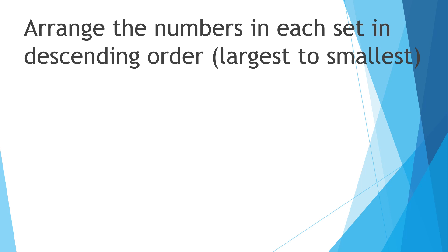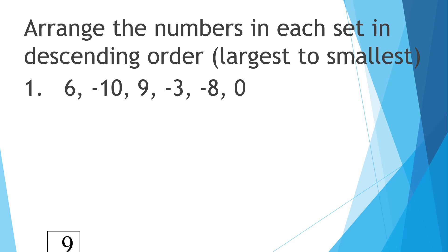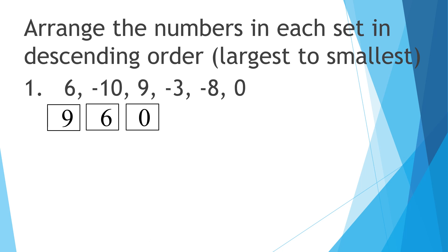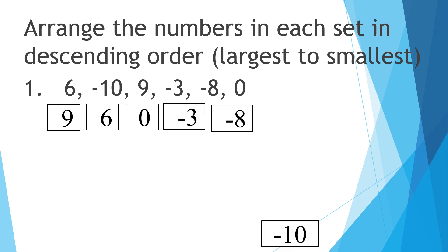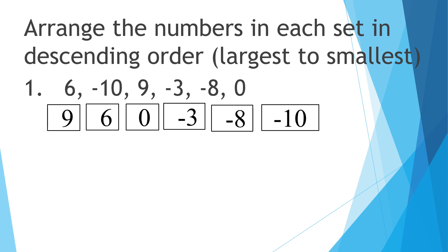Arrange the numbers in each set in descending order, largest to smallest. Number one: positive six, negative ten, positive nine, negative three, negative eight, and zero. The largest number is positive nine, then positive six, zero, negative three, negative eight, and negative ten — the smallest number.